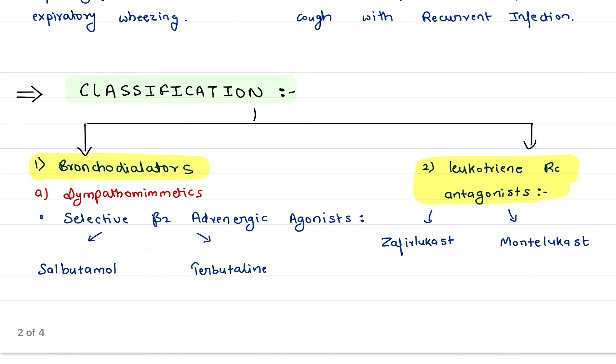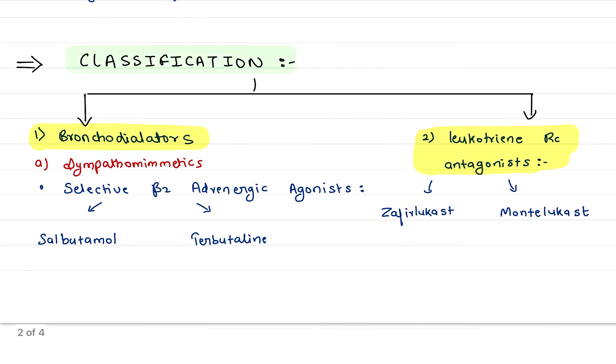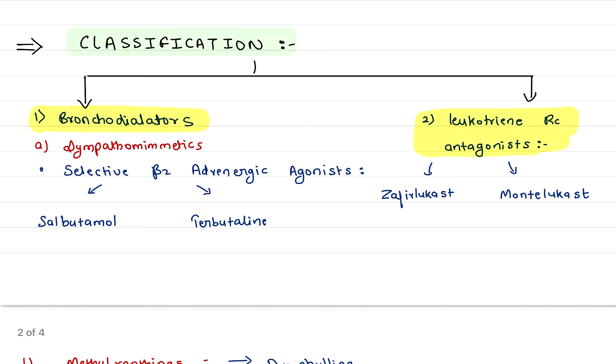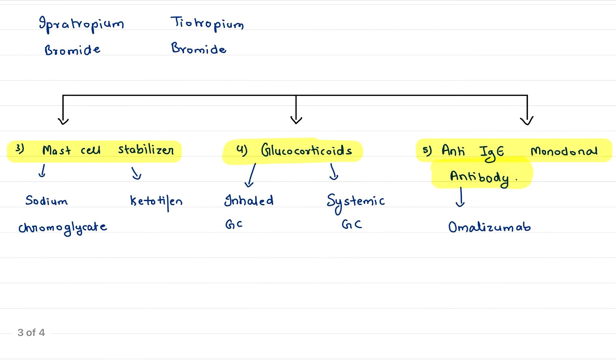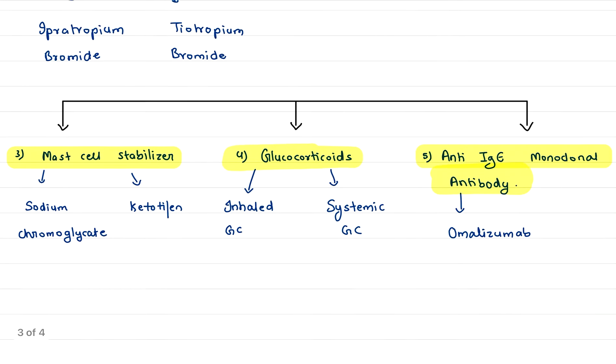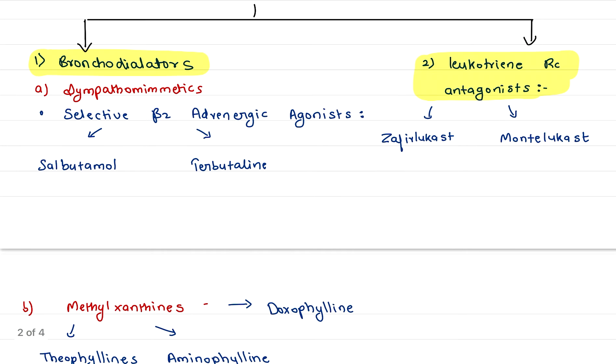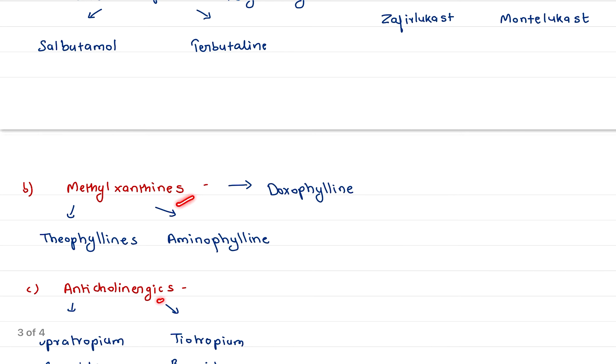Now talking about the classification, we have five points. First is bronchodilators, second is leukotriene receptor antagonists, third is mast cell stabilizers, fourth is glucocorticoids, and fifth is anti-IgE monoclonal antibody.